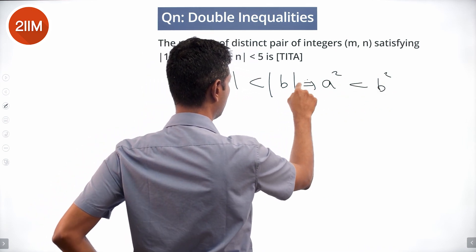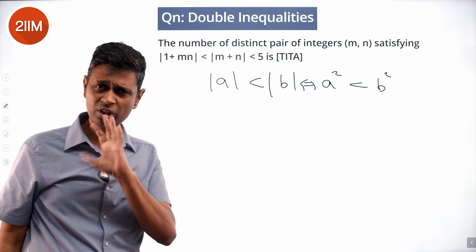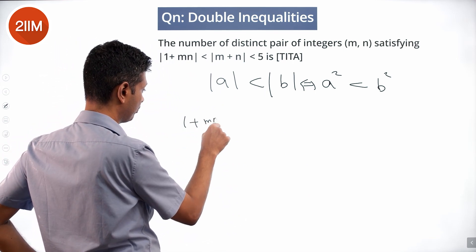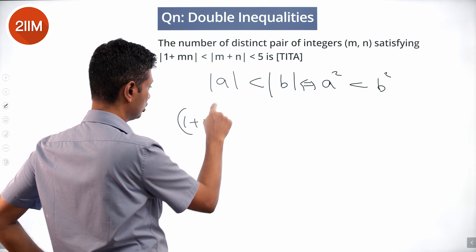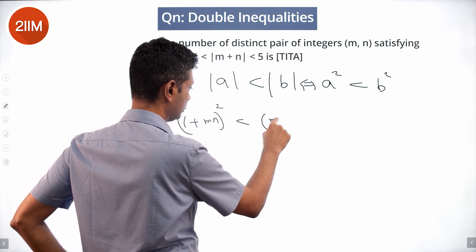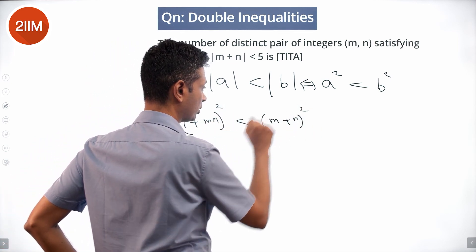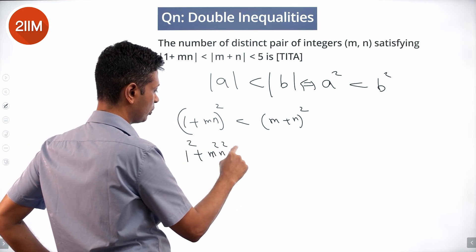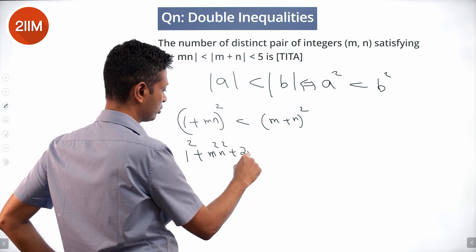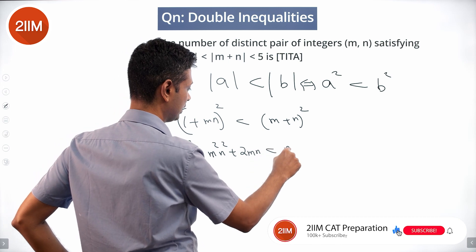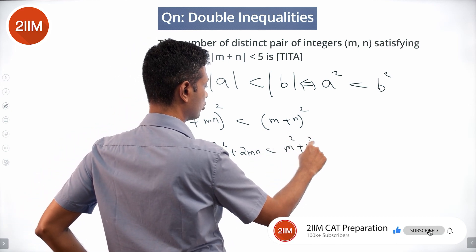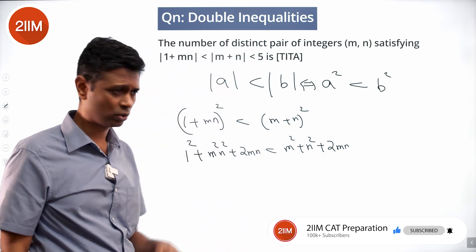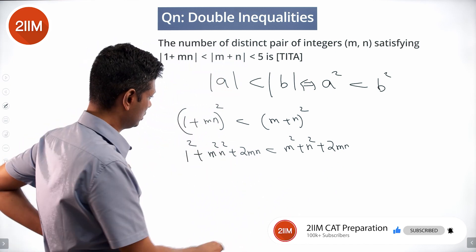That means we can say (1 + mn)² is less than (m + n)², or 1² + m²n² + 2mn is less than m² + n² + 2mn. Nice, so far so good.